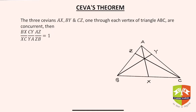So it's been over three centuries that we've been using this theorem. Before we state it, you must understand what is meant by the word 'cevian.' A cevian is a line segment which joins a vertex of a triangle to any given point on the opposite side. For example, AX, BY, and CZ are cevians. There can be infinitely many cevians possible.